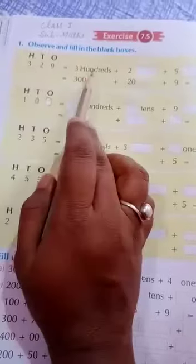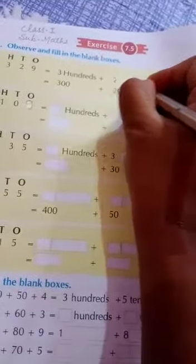329, 3 is 100, 2 is 10, and 9 is 1. So, 300 plus 20 plus 9 is equal to 329.